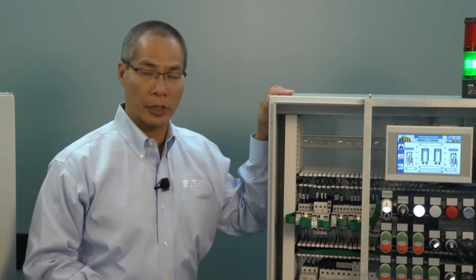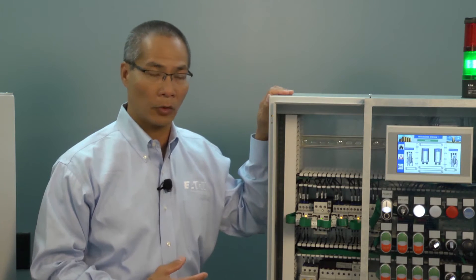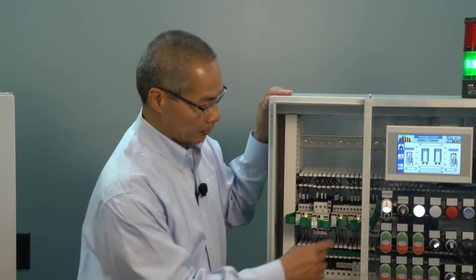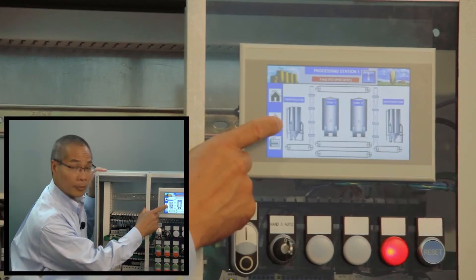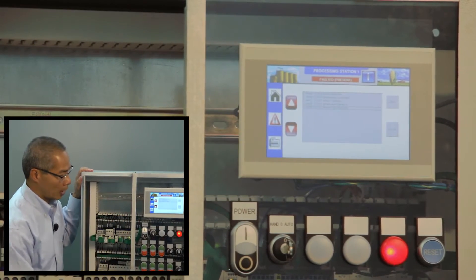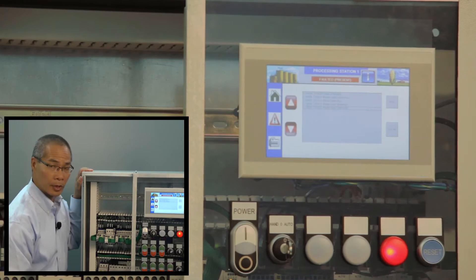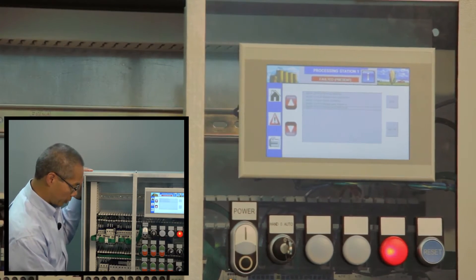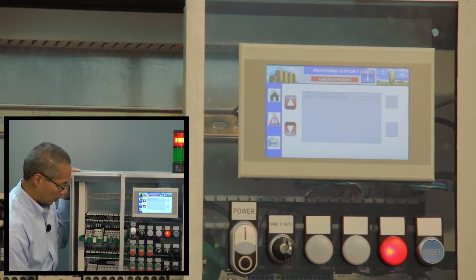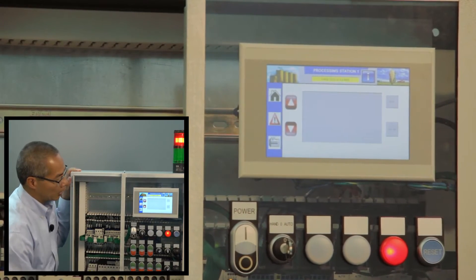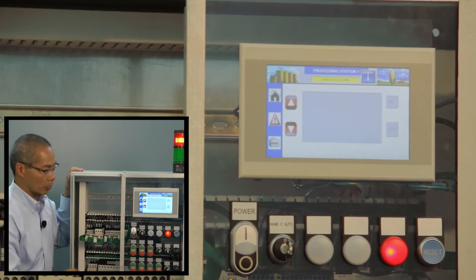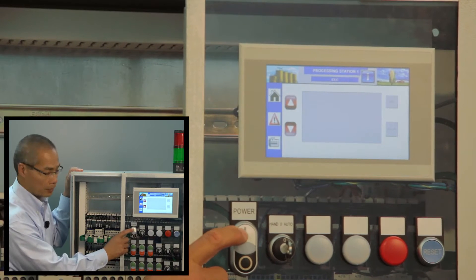One of the other benefits of using SmartWire DT is the enhanced diagnostics that you can get over the system. For example, if something were disconnected or turned off, I can monitor that information over the network and show it on my touch screen. I've set up an alarm page here that tells me exactly where those trouble areas are. I can then go in and make those corrections by reconnecting the devices, resetting my tripped manual motor protector units, and as the faults are fixed, the errors will go away. I would reset the device and then restart my system.